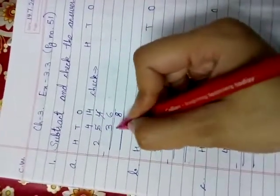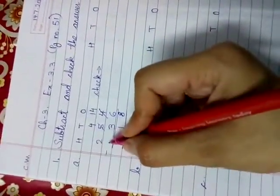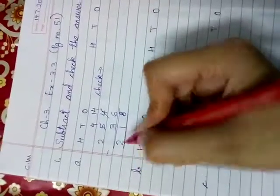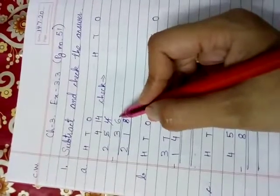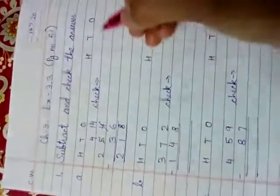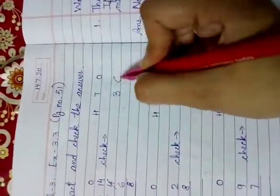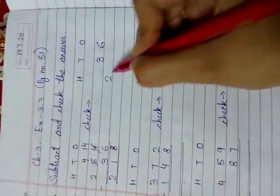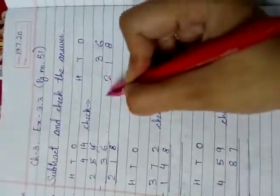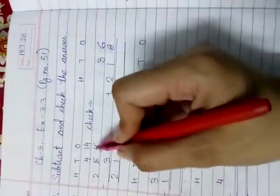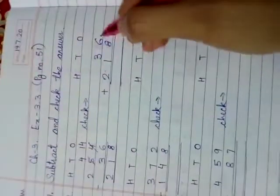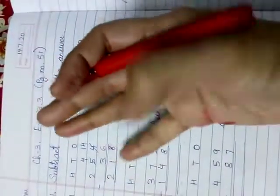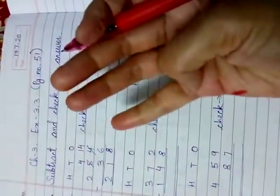4 minus 3 is 1. And, since no number is here, so we will write 2. 218. So, what we need to do, we have to write the subtrahend and the difference. So, here you write 36, tens and ones. 36 and 218. 218. We are going to add it.